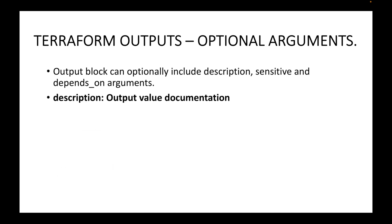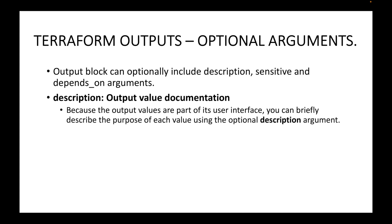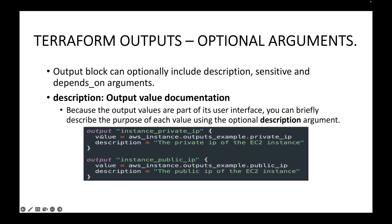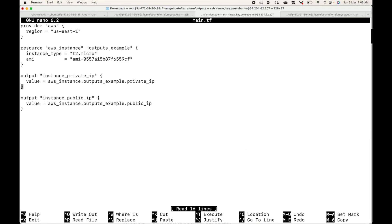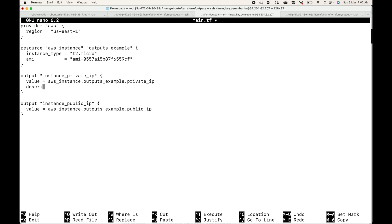First we will look at description. This is simply documentation — if you want to give some metadata or additional information about why you're using an output block and what its purpose is, you can use the description argument. Because output values are part of the user interface, you can briefly describe the purpose of each value. Here, for example, I have two output blocks and I've given a description for each one, which is useful for other users to understand the purpose.